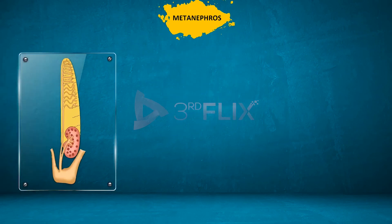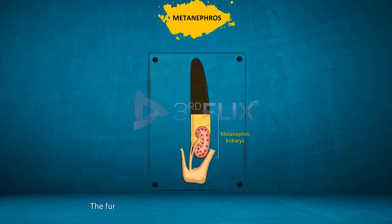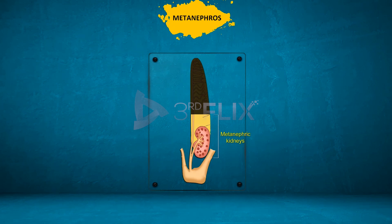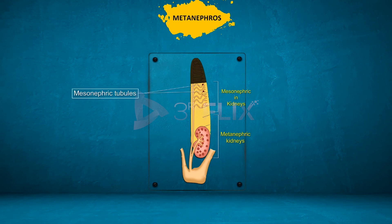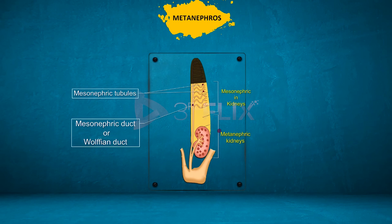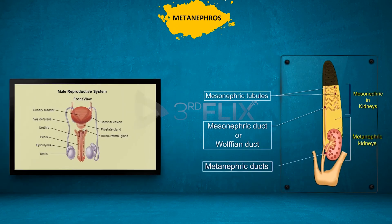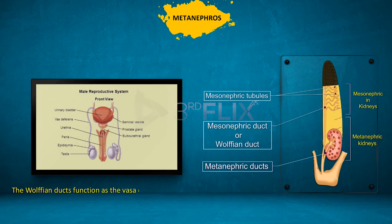Metanephros: the functional kidney of the amniotes is the metanephros. It is formed posterior to the mesonephros. When the metanephric tubules develop, all the mesonephric tubules disappear; however, those mesonephric tubules associated with the testes in male amniotes form the vasa efferentia. The metanephric ducts, or ureters, are developed from the base of the Wolffian ducts. The Wolffian ducts function as the vas deferens in male amniotes.